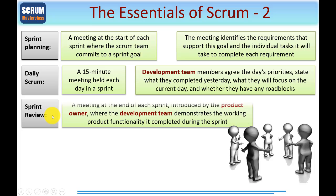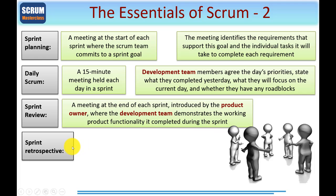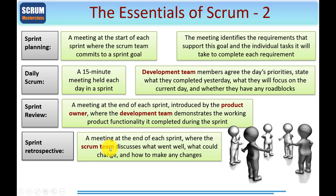Then the Sprint Review — which is actually a presentation, a meeting at the end of each Sprint, introduced by the Product Owner — where the development team demonstrate the working product functionality they have completed during the Sprint. And finally, the Sprint Retrospective, which looks back on the Sprint itself. Here the whole Scrum team discusses what went well, what could change, what they could do better, and how to make any changes. Remember, Sprints occur one after the other, and in a typical project stage you may well find many Sprints held sequentially, so these steps would occur for each of those Sprints.